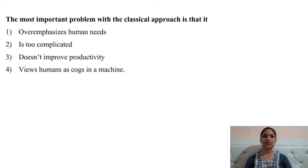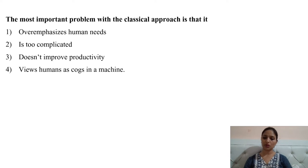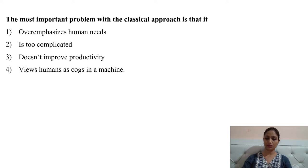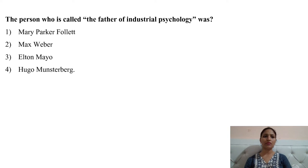Next question: the most important problem with the classical approach is that it — option one: overemphasized human needs; option two: is too complicated; option three: doesn't improve productivity; option four: views humans as cogs in a machine. Option number four, views humans as cogs in a machine, would be the right answer.